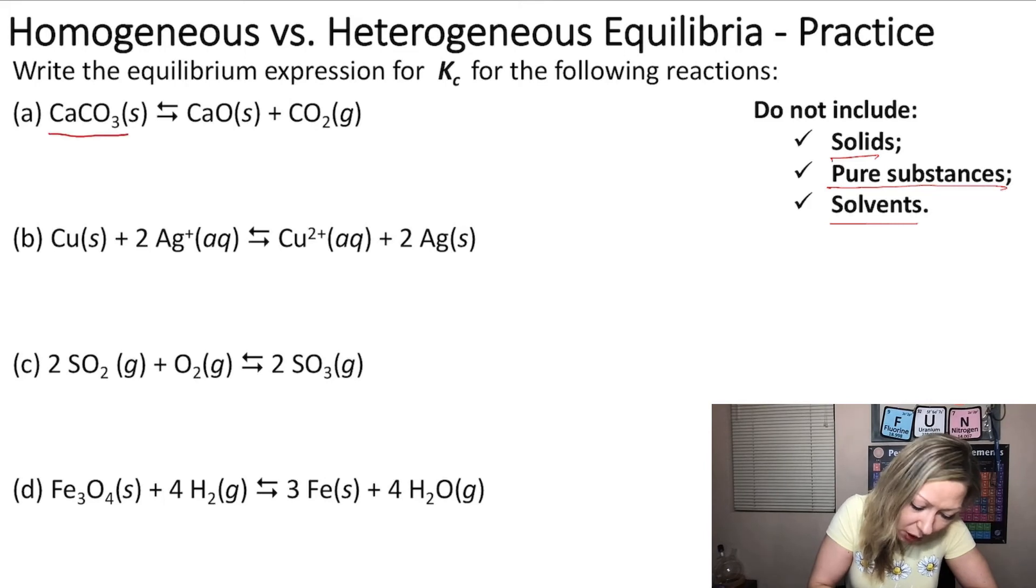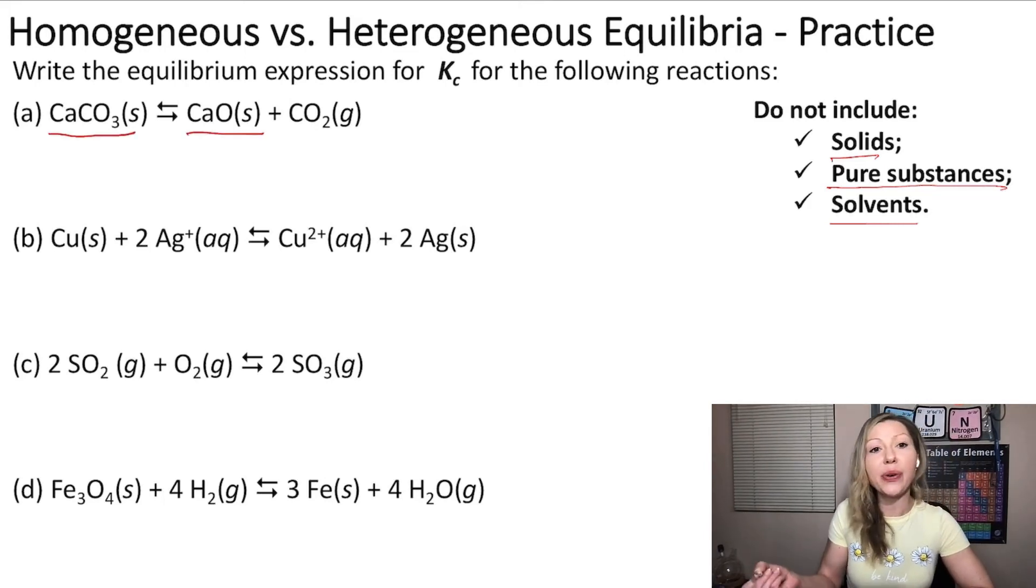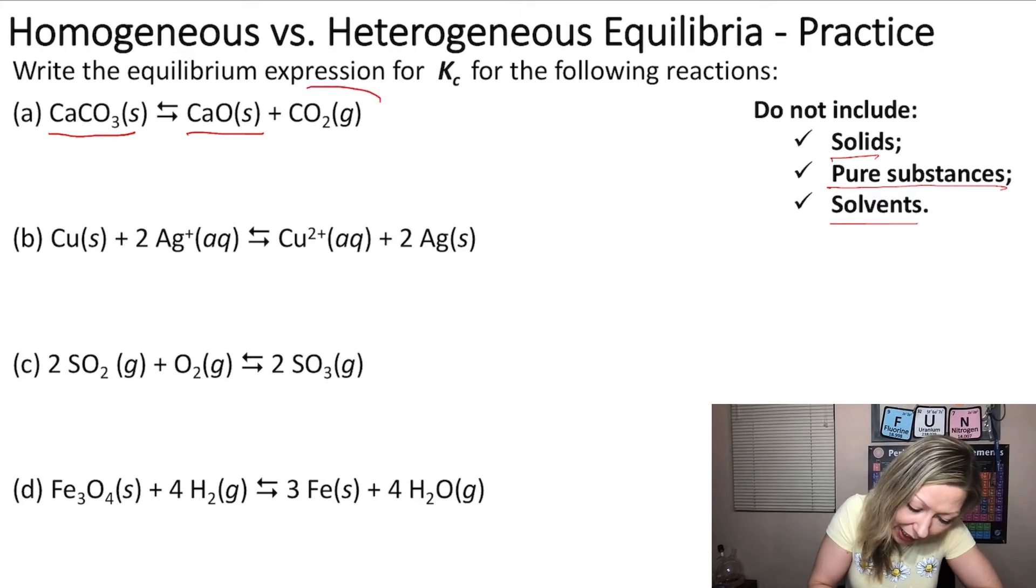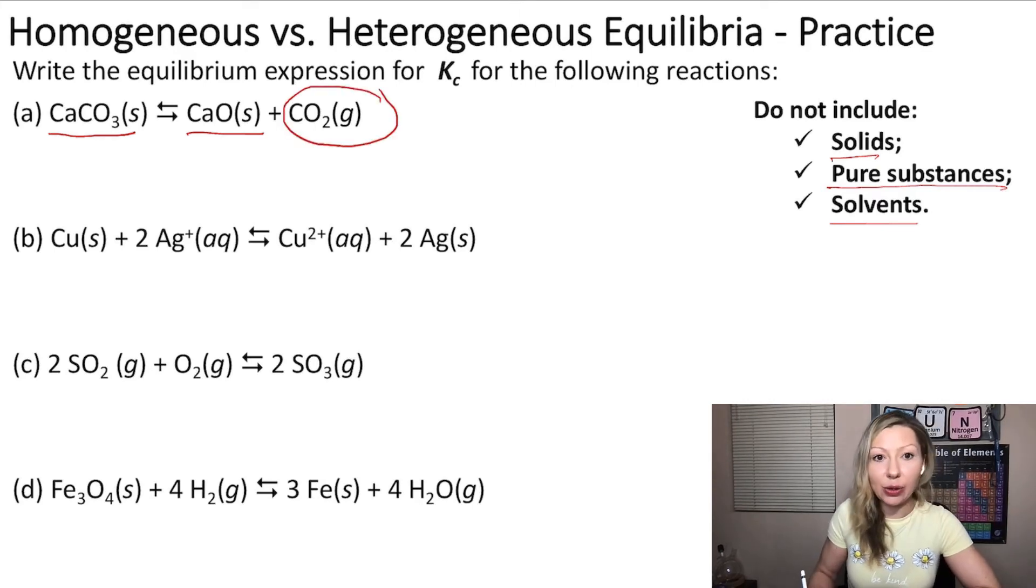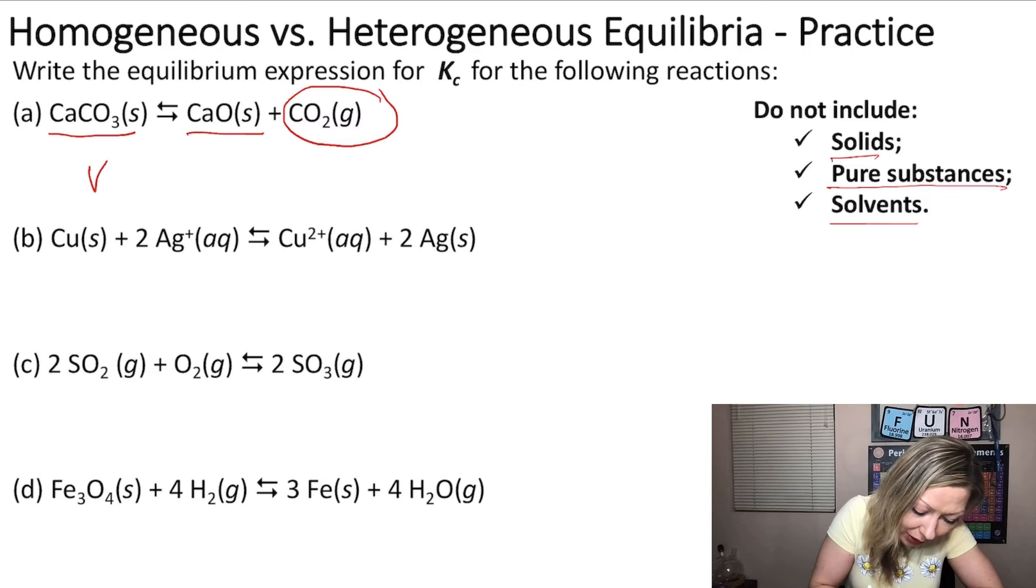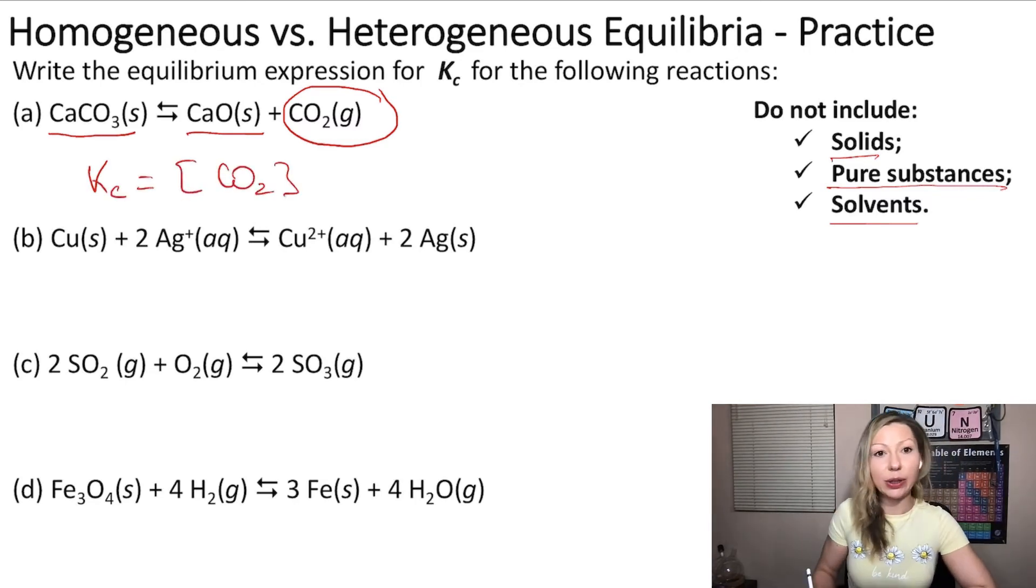So we actually have calcium carbonate, which is a solid, and we have calcium oxide, which is also a solid. So we are not going to add those into the Kc calculation. We only need to take into account the concentration of CO2. So Kc in this case simply equals to the concentration of CO2.